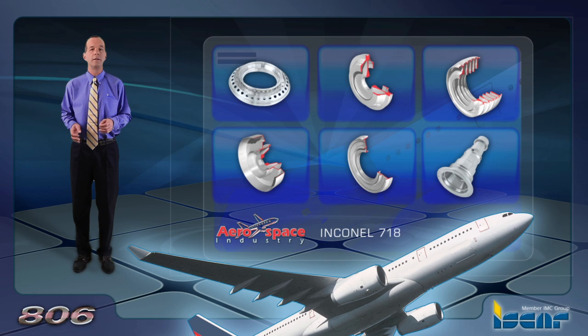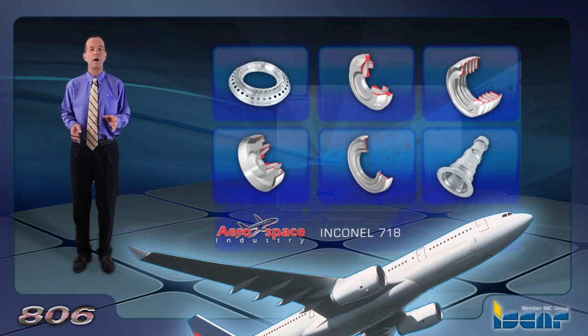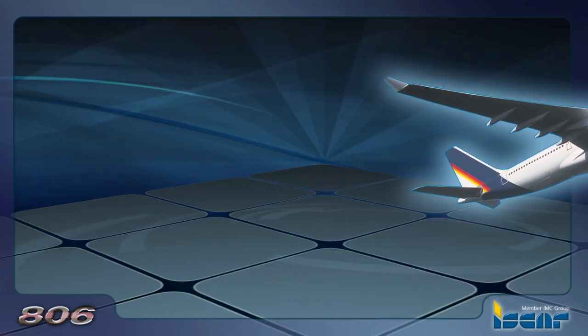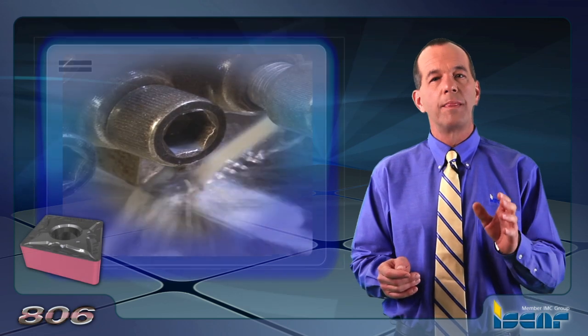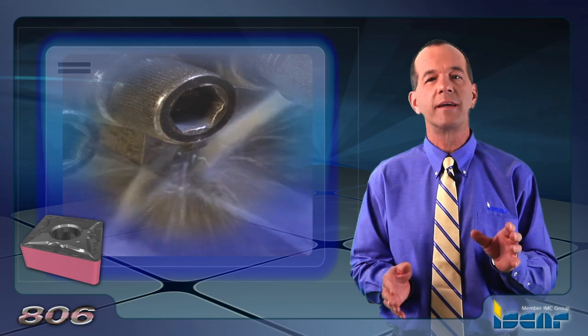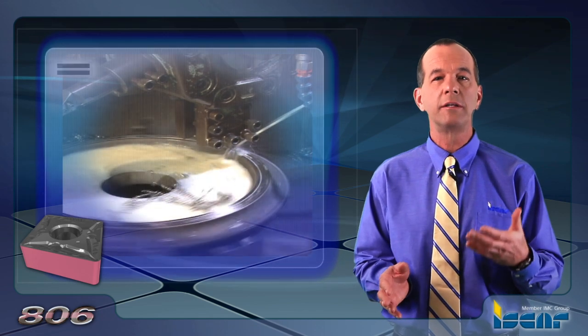The microstructure of Inconel 718 is made of an austenitic structure possessing high tensile and yield strength. The major problems encountered when machining Inconel 718 are characterized by very high temperatures on the cutting edge of the insert due to the abrasive elements in the material composition.